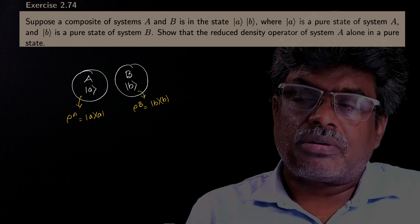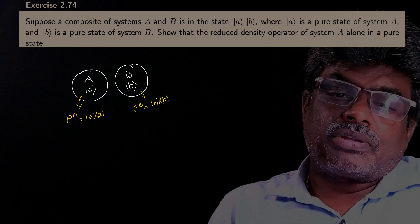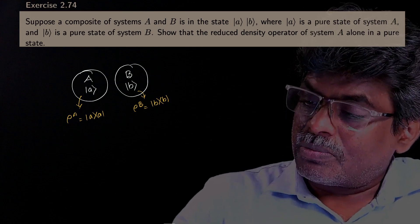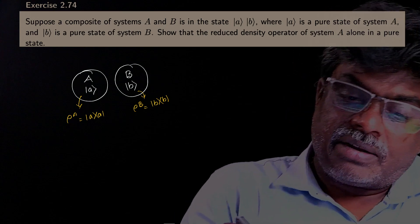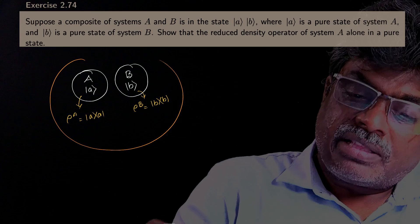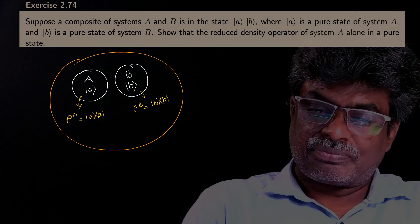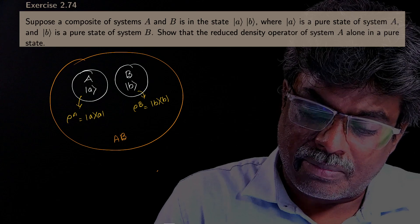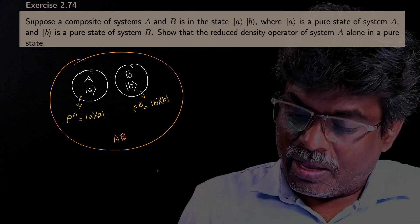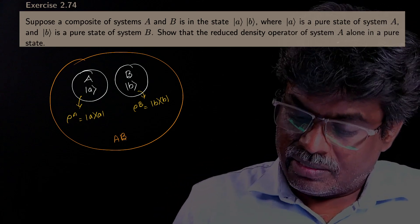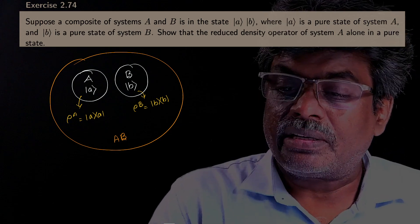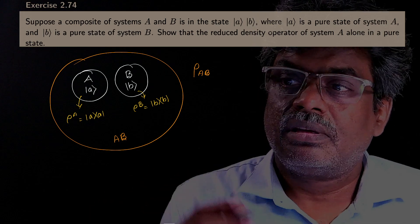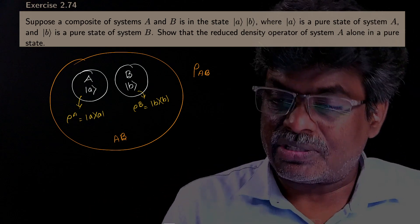Now, he is asking about the composite system AB — that means the combined system of A and B. If you take this combined system AB, let us call this the composite system AB. We have to take the density operator corresponding to the combined system.